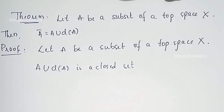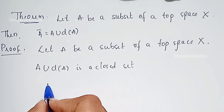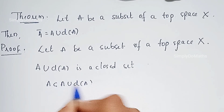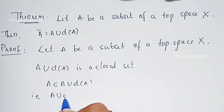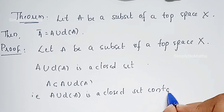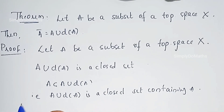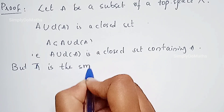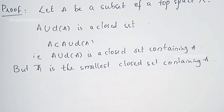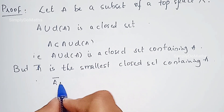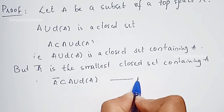By using this, we prove the theorem: A bar is nothing but A union derived set of A. Since A is a subset of A union derived set of A, and A union derived set of A is a closed set containing A, but we know that A bar is the smallest closed set containing A, as proved in a previous video. Therefore, A bar is a subset of A union derived set of A. Call this equation 1.